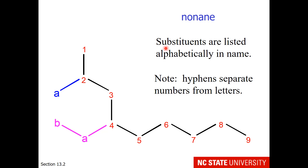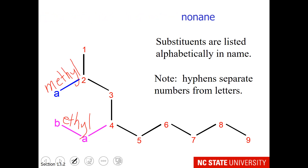Now, what about the branches? When we use IUPAC nomenclature — agreed upon worldwide — substituents are listed alphabetically by name. Many of you will be tempted to put 2 in front of 4 because 2 is a lower number, but we go with the alphabetical order of the substituents. The branch off the second carbon is one carbon long, so that is methyl. The branch off the fourth carbon is two carbons long, so that is ethyl. E comes before M in the alphabet, so our name is 4-ethyl-2-methylnonane.